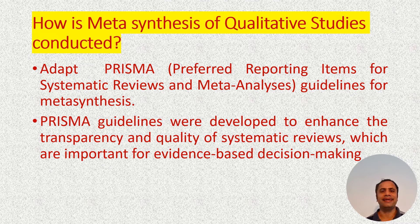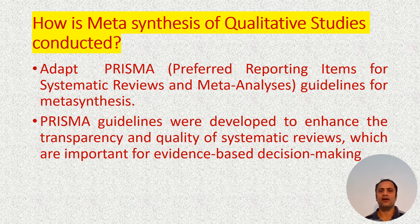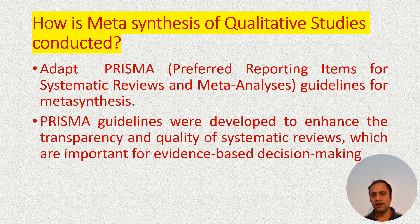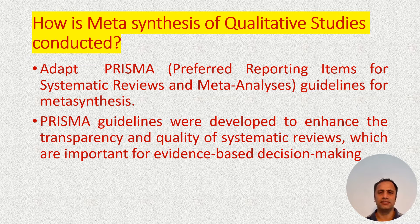As with any systematic literature review, metasynthesis of qualitative studies also has a guideline to be followed. One of the most famous guidelines is PRISMA, which is an acronym for Preferred Reporting Items for Systematic Reviews. The PRISMA guidelines help us to develop and enhance transparency in the findings.